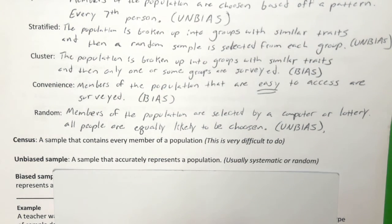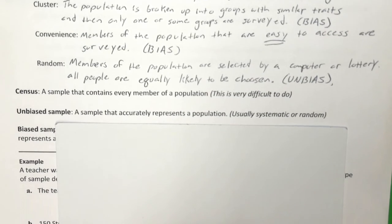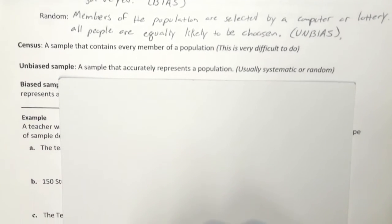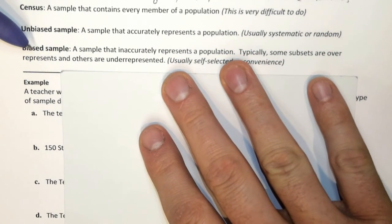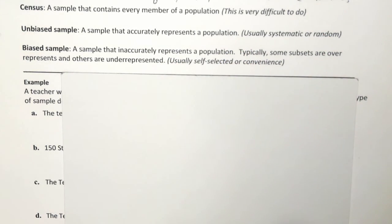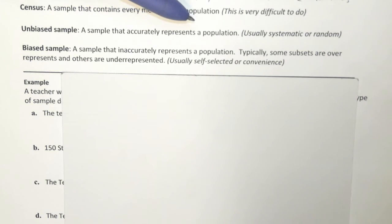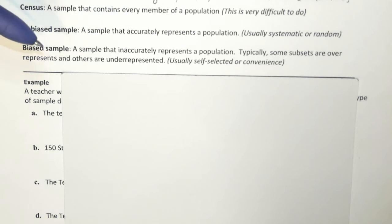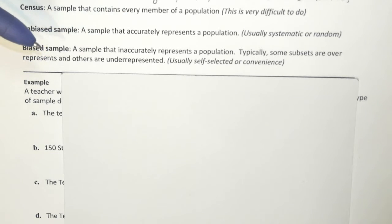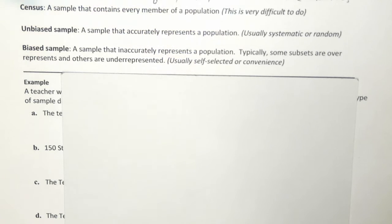Now we've been talking about good and bad samples, and there's actually terminology for that. A good sample is called an unbiased sample and a bad sample is called a biased sample. An unbiased sample accurately represents the entire population — the lows, the mediums, the highs, everyone. A biased sample is an inaccurate representation of the population where some subsets are overrepresented and others are underrepresented. This typically comes from self-selected or convenience sampling.